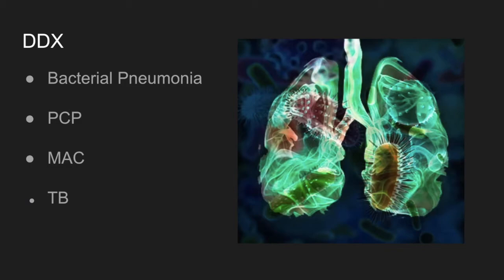PCP is a fungus seen in patients with a CD4 count of less than 200. It's airborne and lives in the alveoli — people are usually infected at a young age. Symptoms are gradual in onset and can take several weeks before the patient presents. MAC generally occurs with a CD4 count of less than 50 and is usually a disseminated disease, with lung findings including fever, night sweats, cough, and lung infiltrates, but also GI upset, hepatomegaly, lymphadenopathy, and bone marrow suppression.